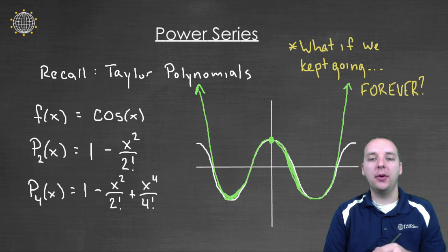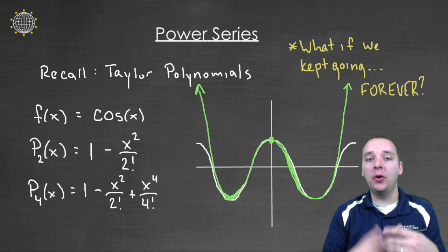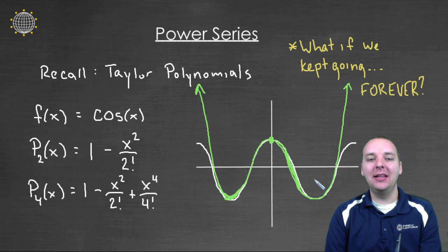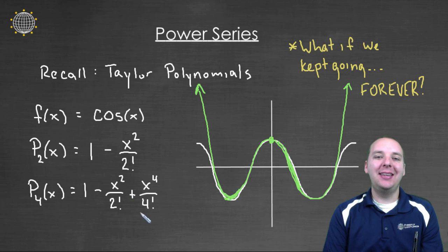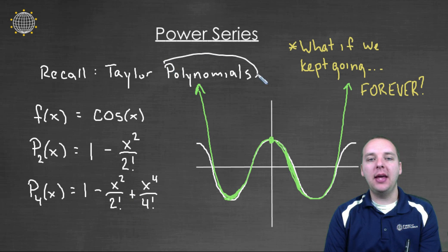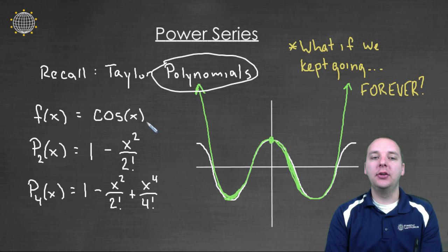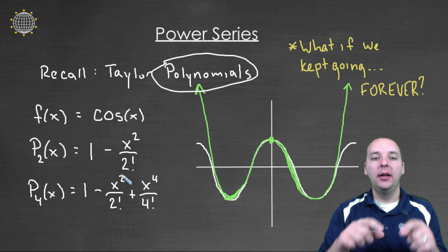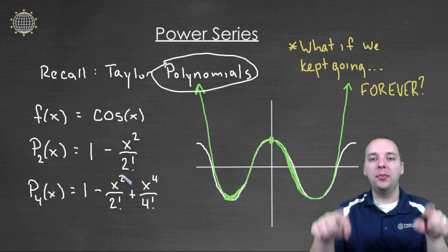What if we kept going forever? What if we added on basically infinitely many terms? Now, by definition, it would not be a polynomial anymore because a polynomial has a finite degree, like degree 2, degree 4, degree 10, degree 100. But nevertheless, I think we see with each increase in power, the approximation gets better and better and better.